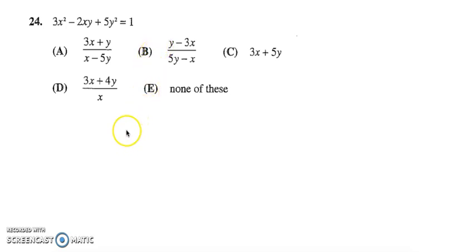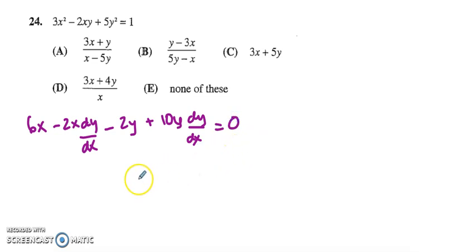Here we are asked to implicitly differentiate. To implicitly differentiate this, we will take 3x squared to 6x, and then the product rule on negative 2xy to get negative 2x dy/dx minus 2y plus 10y dy/dx, and then 1 differentiates to 0. I'll pull out everything with a dy/dx in it and combine those into one parenthesis, and then I will add 2y and subtract 6x from both sides.